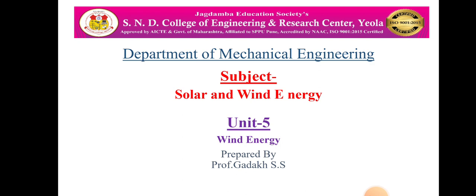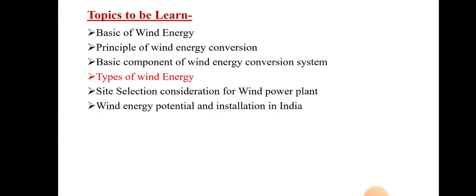As we remember, if you have seen the last videos, we have discussed all the points from unit number 1 to 4, which are all related to solar energy. Since in the last some lectures, we have started unit number 5, that is wind energy. In wind energy, we have discussed some points and remaining points we are going to continue. We have covered basics of wind energy — what is wind energy, how that energy will be utilized for generating electrical or mechanical power, the principle by which wind energy can be converted, and the basic components of wind energy conversion system.